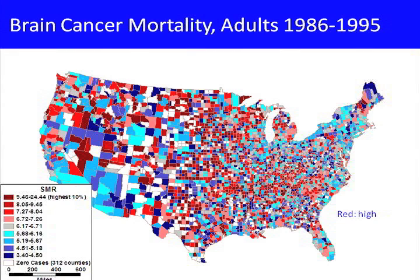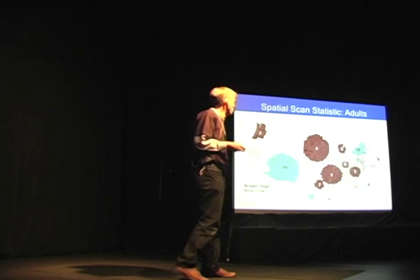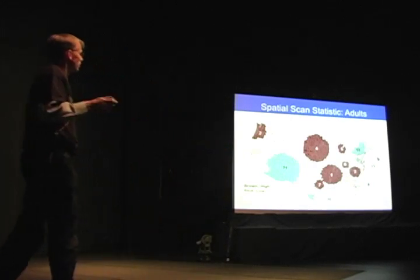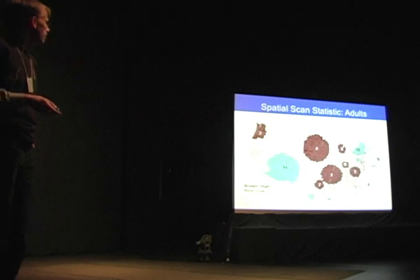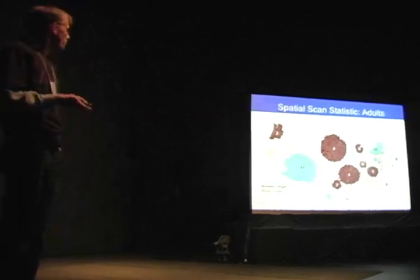Red here is high and blue is low. Are there any clusters on this map of brain cancer mortality in the US? The brown clusters are statistically significant, with the most significant one having a p-value less than 0.0001. The green ones are statistically significant areas with less brain cancer than the other parts of the map.